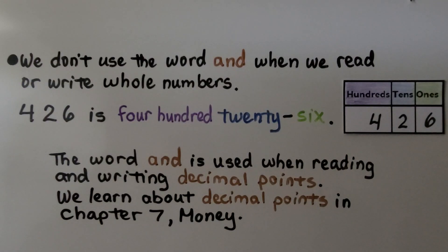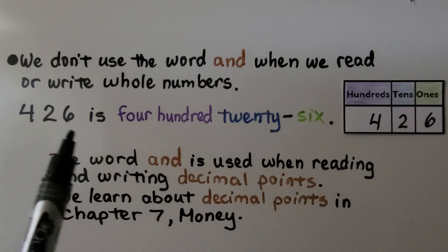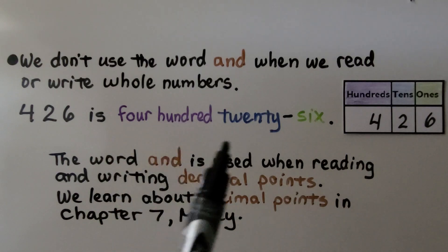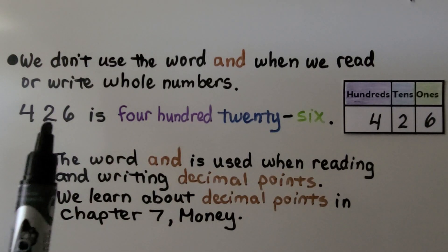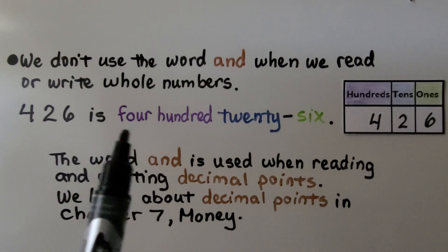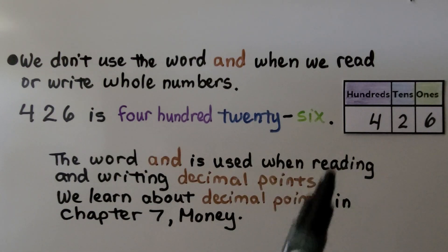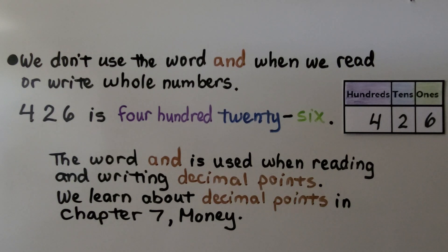We don't use the word 'and' when we read or write whole numbers. Four hundred twenty-six is said as 'four hundred twenty-six,' not 'four hundred and twenty-six.' The word 'and' is used when reading and writing decimal points. We'll learn about decimal points in chapter seven when we learn about money, and also in fourth grade and higher.